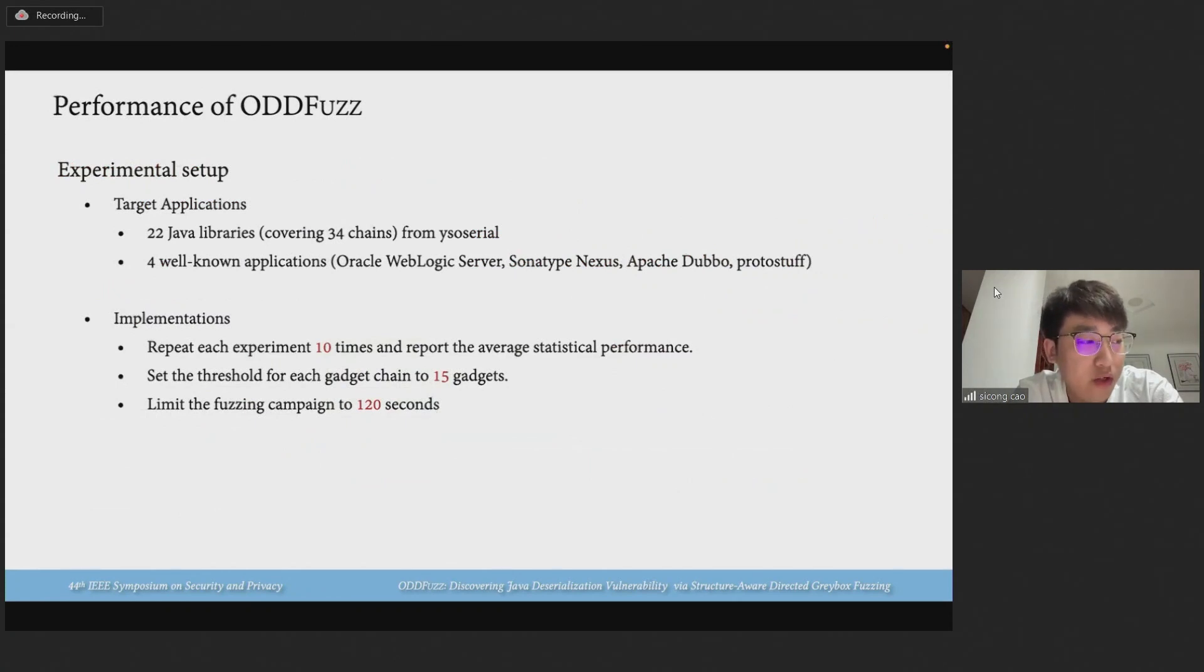For evaluation, we select Y0, a collection of 34 known gadget chains discovered in 22 common Java libraries that can be exploited to perform unsafe object deserialization. In addition, we also apply AuditFast on four famous Java applications to test its ability in discovering Java audit vulnerabilities in the wild. These applications contain no serialization entries and cover diverse application domains. We repeat each experiment 10 times and report the average static performance and set the threshold for each gadget chain to 15 gadgets. Each chain will be fuzzed around 120 seconds.